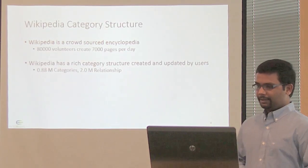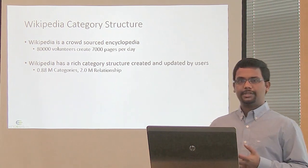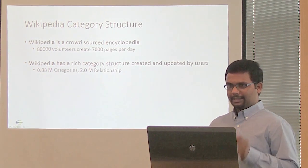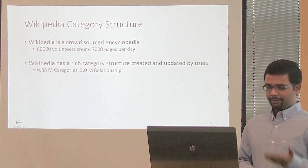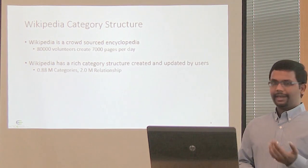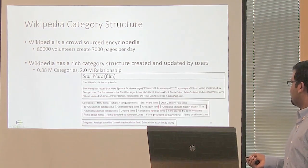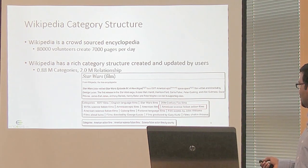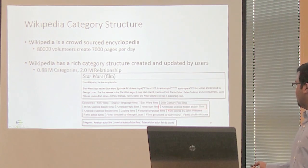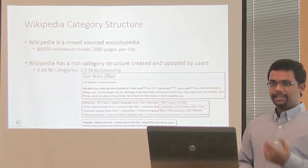Wikipedia is a crowdsourced encyclopedia with a hierarchical category structure used for categorizing articles, created and updated by volunteers. Since it is hierarchical, we can derive a taxonomy to address the challenges of creating a manual taxonomy. For example, the film Star Wars has many categories, and these categories in turn have parent categories. For instance, American Science Fiction Action Films has American Action Films and American Action Fiction Films as parent categories, forming a hierarchical structure.